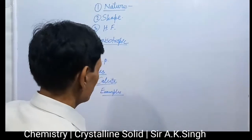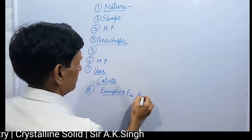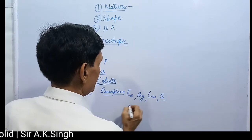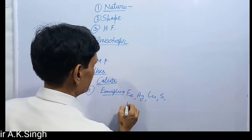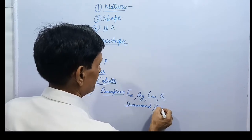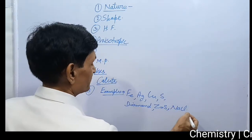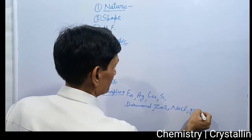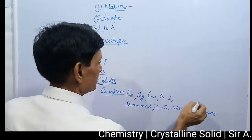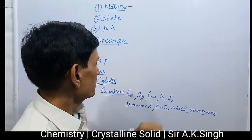Some examples of crystalline solids include metals like iron, silver, and copper; non-metals like sulfur and iodine; and covalent solids like diamond. Compounds such as zinc sulfide (ZnS), sodium chloride (NaCl), and quartz are also examples of crystalline solids.